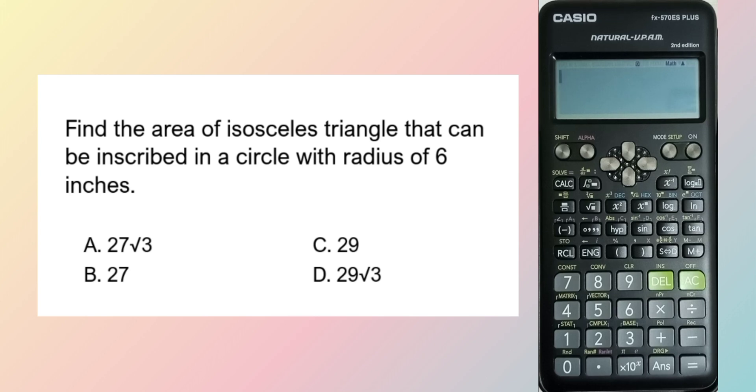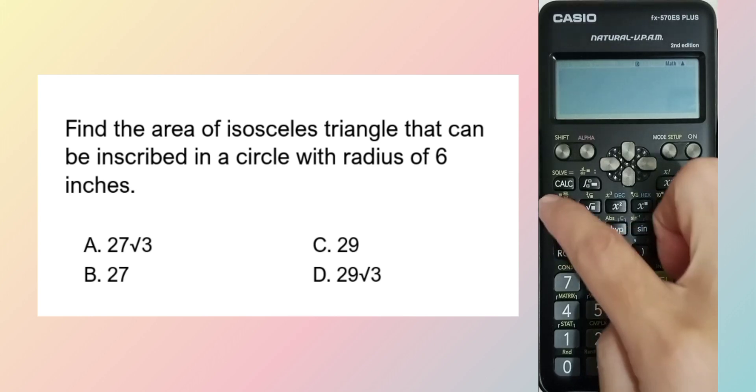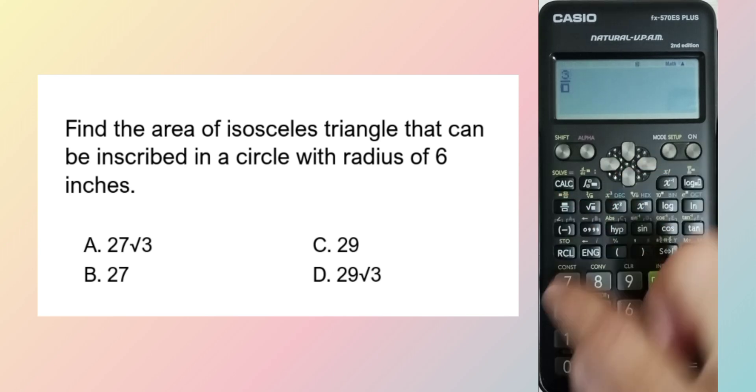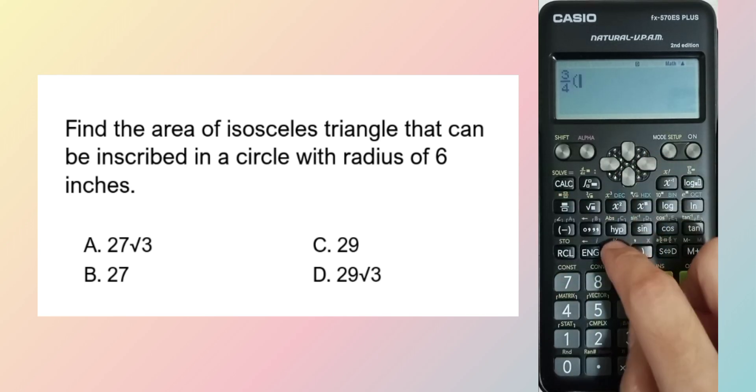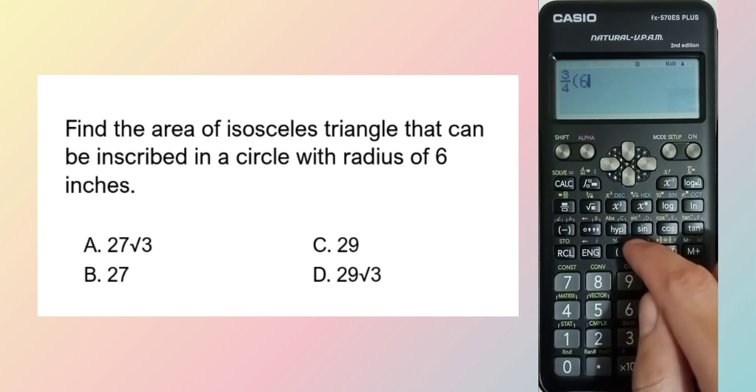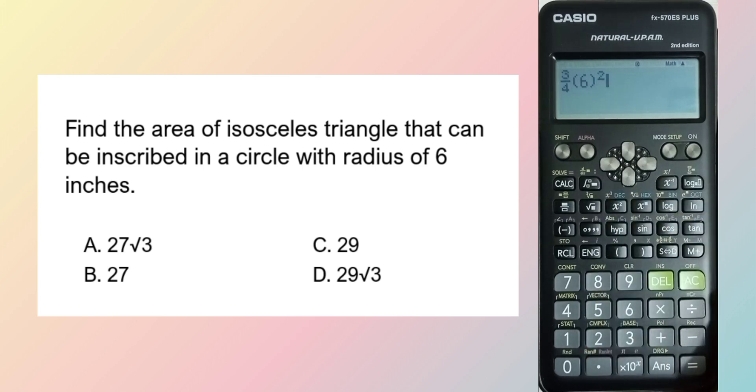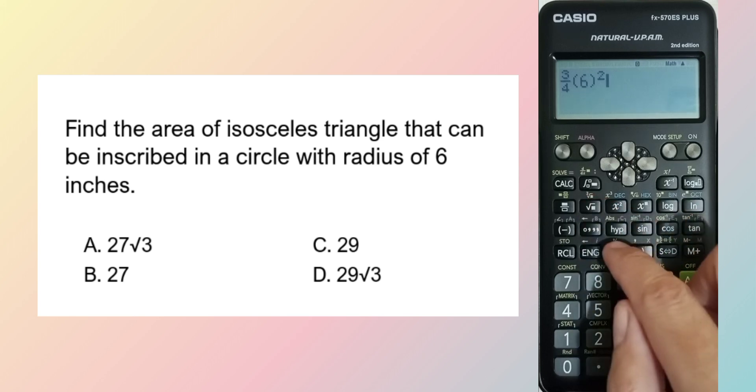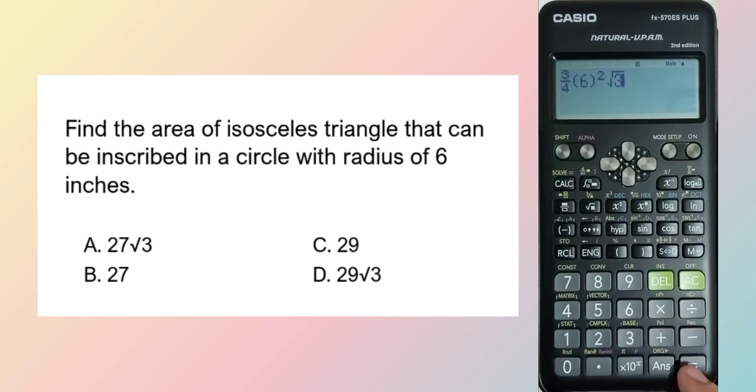Area of isosceles triangle that can be inscribed in a circle is equal to 3/4 times r squared, where r is equal to 6, squared times square root of 3. So that is the formula and the answer is 27√3.